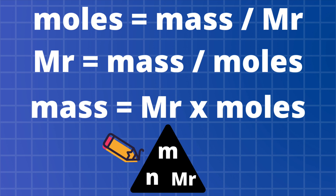Rearranging our equation is also an important skill. Our original calculation is moles = mass ÷ MR. The two rearrangements are: MR = mass ÷ moles, and mass = MR × moles. A nice way of remembering this is 'mass equals Mr moles.' You can also use the triangle with lowercase m (mass) at the top, n (number of moles) at the bottom left, and MR at the bottom right.